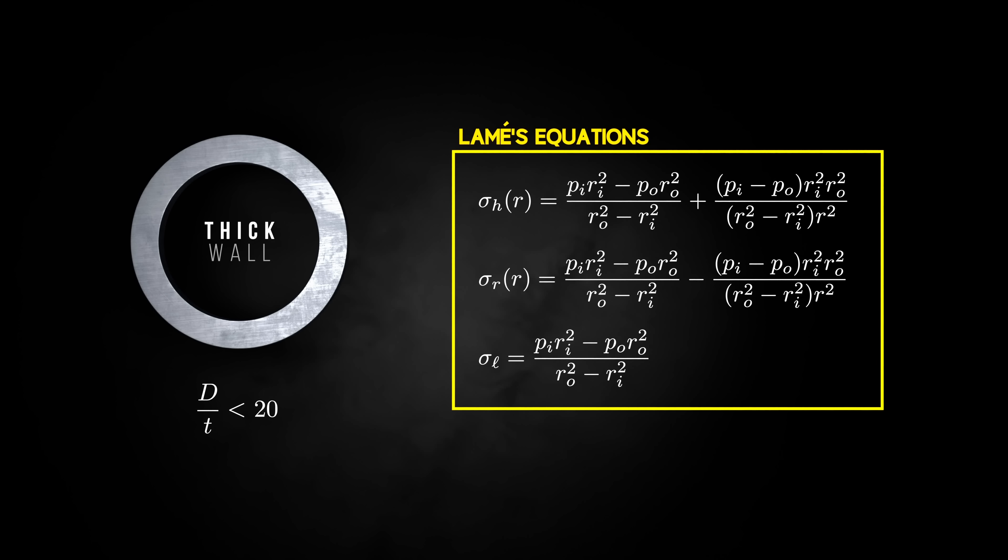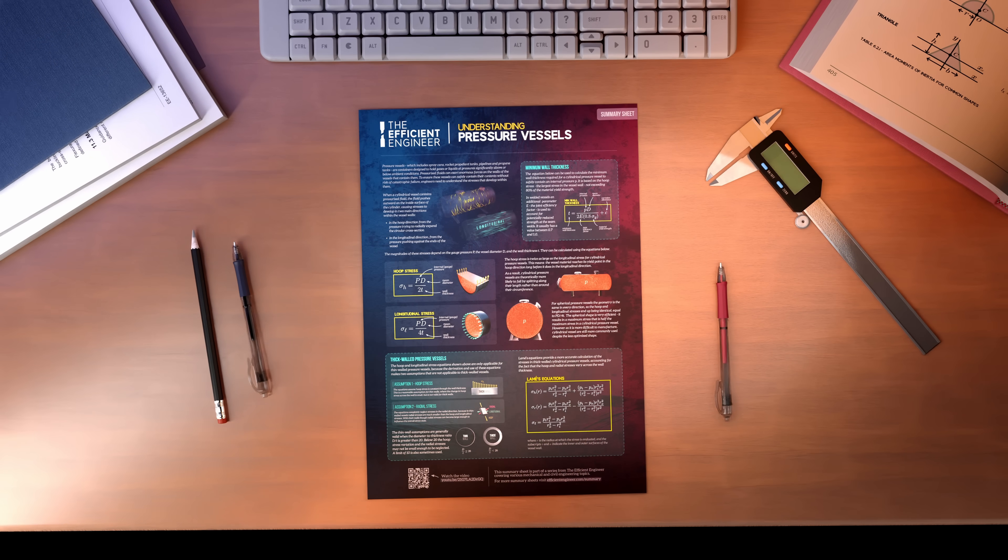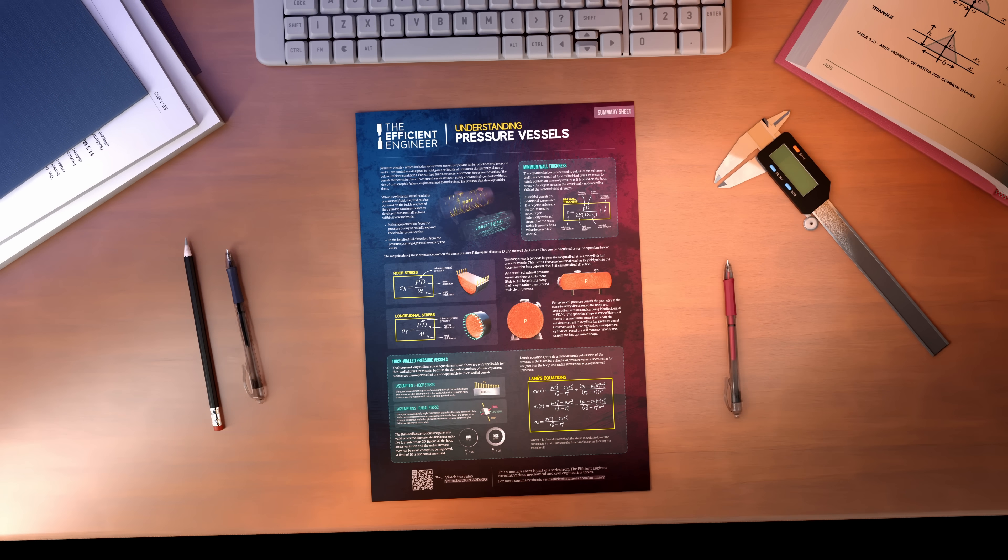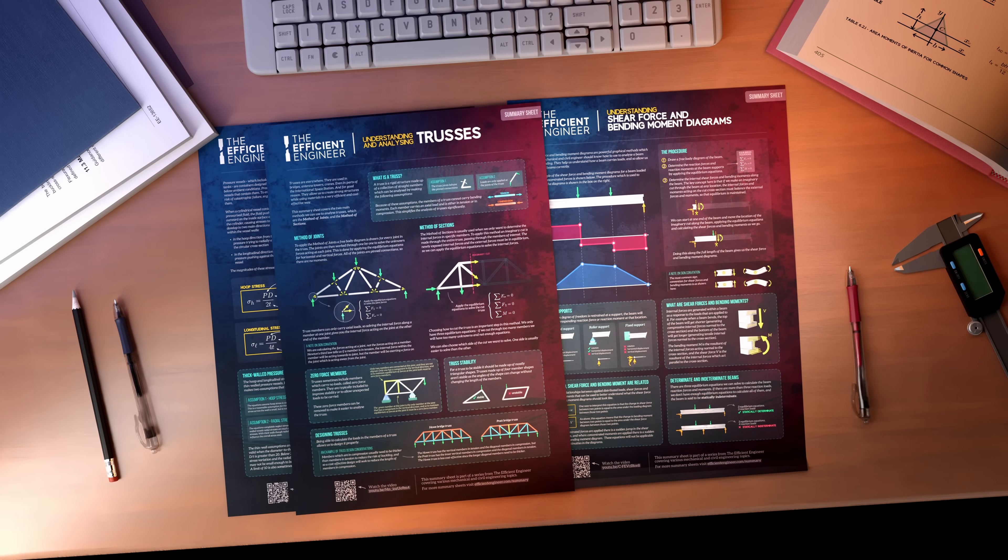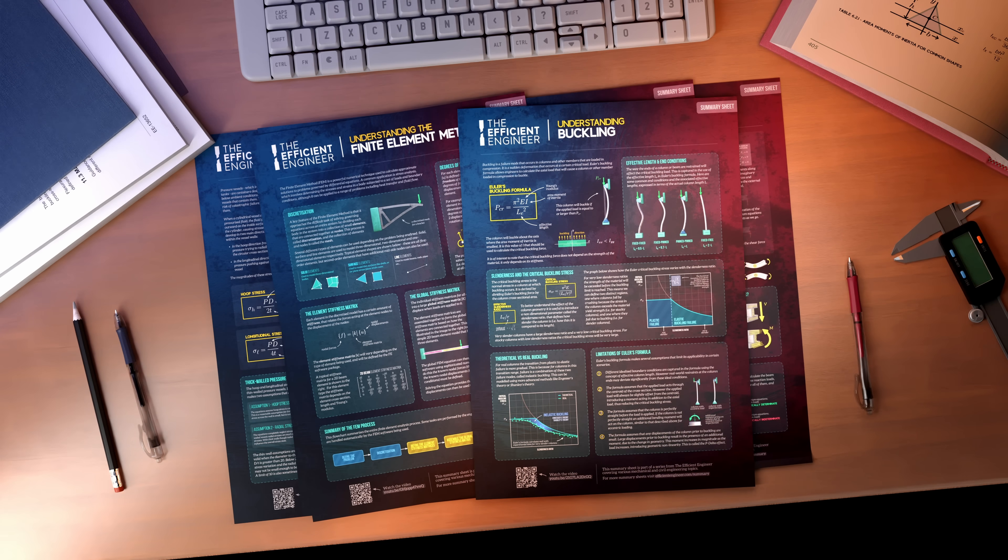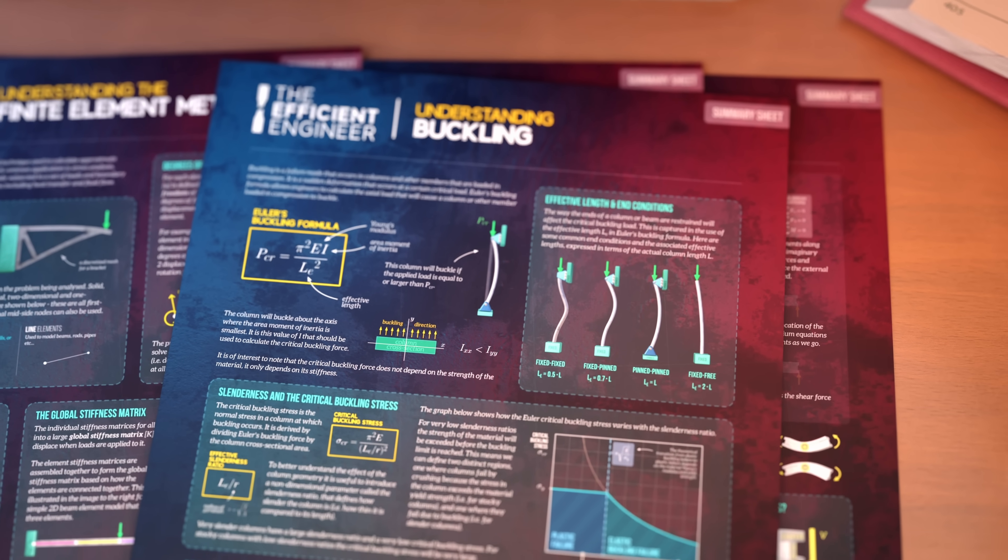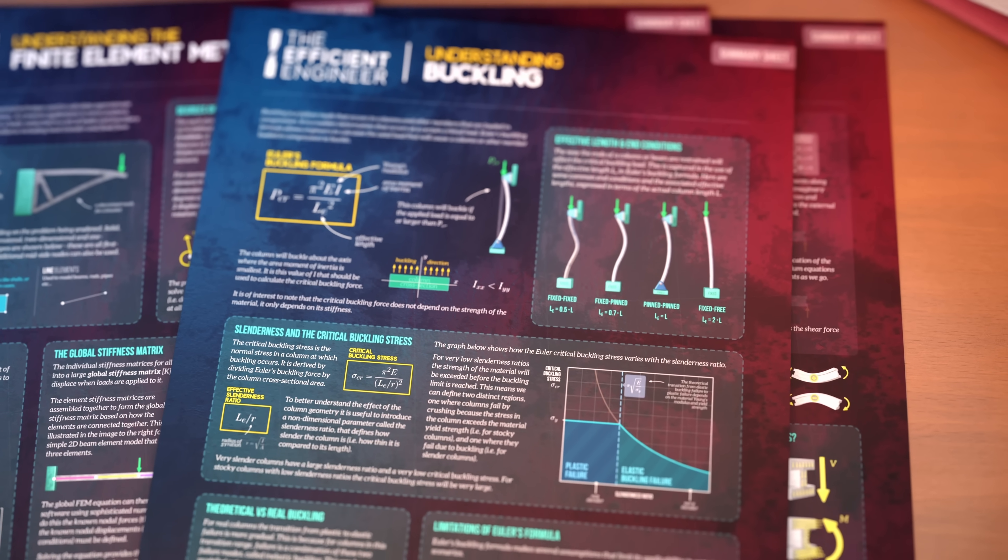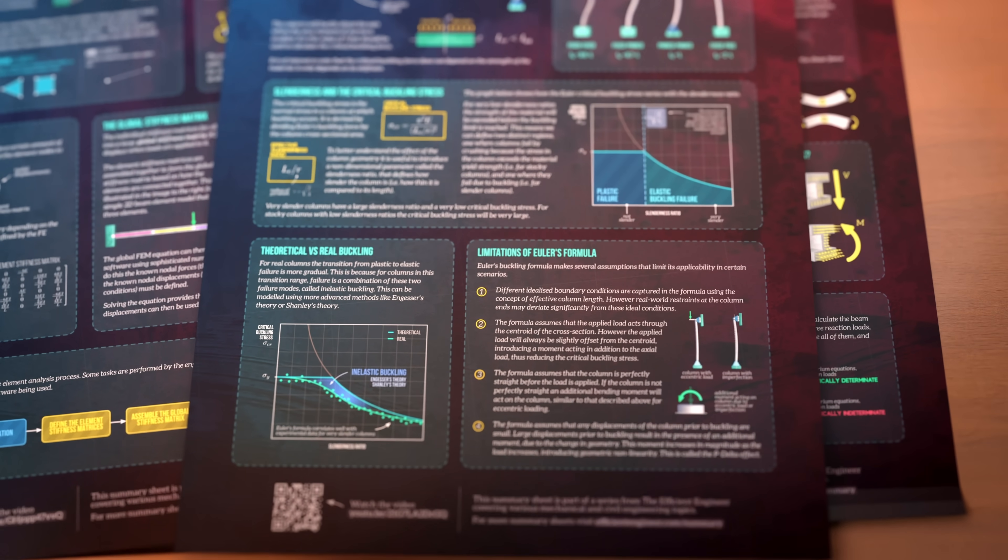To help you keep track of all these different pressure vessel equations and when to apply them, I've created a one-page summary sheet that covers all of the important information on a single page. It's part of a growing collection of engineering summary sheets I've been developing, covering shear force and bending moment diagrams, trusses, torsion, the finite element method, buckling, and more. There are 14 sheets in total, and I'm adding more over time. Each one summarizes key equations and concepts in a quick review format, making them ideal as study aids or reference guides, great for exams, interview prep, or for when you just need to brush up on a particular topic.